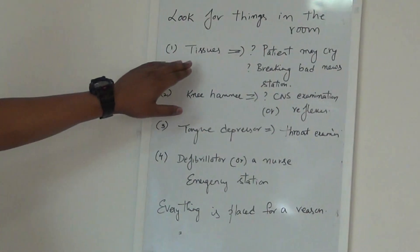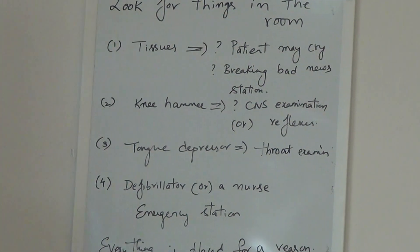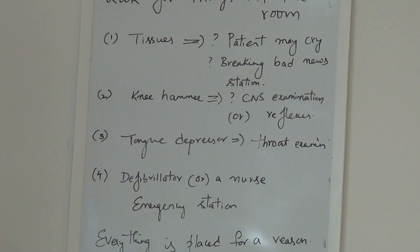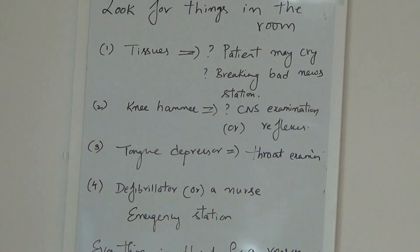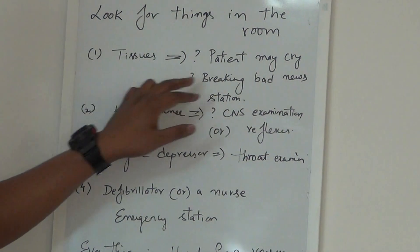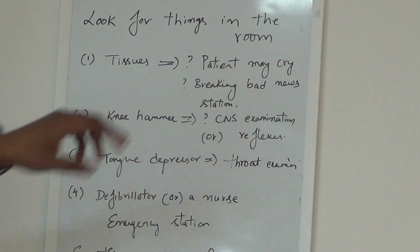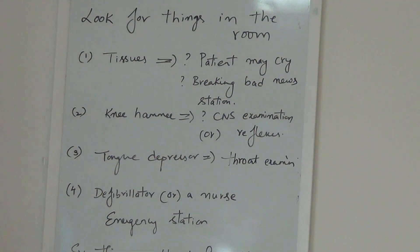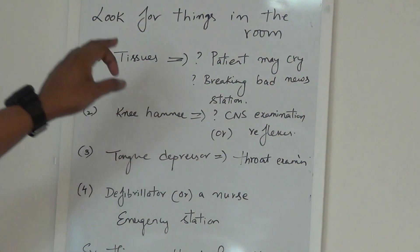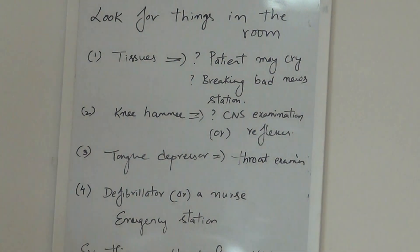I'll tell you a few examples. First, if you notice tissues in the room and the patient has come for a report, or you think it's a breaking bad news station, you can expect the patient might cry during the station. That's why they place tissues in the examination room.